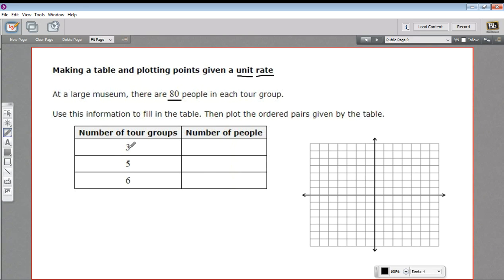So let's fill in our table first. Here we have three tour groups. So how many people is that going to be? Well, you can probably see we just need to multiply by the unit rate. If there are 80 people in one tour group, in three tour groups there'll be three times that amount. So three times 80. Three times eight is 24, and then I can stick a zero on the end. So that's 240.